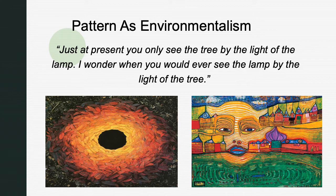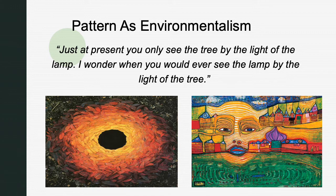Hundertwasser declared that the straight line is 'cowardly, drawn with a rule without thought or feeling — it is a line which does not exist in nature.' Consequently, his paintings are ingrained with contours that define their space in the manner of natural wood grains or onion ring patterns. All the elements of the painting live and breathe through a circulatory system of line and colors, which pulses with expressive energy around and between each component of the composition.